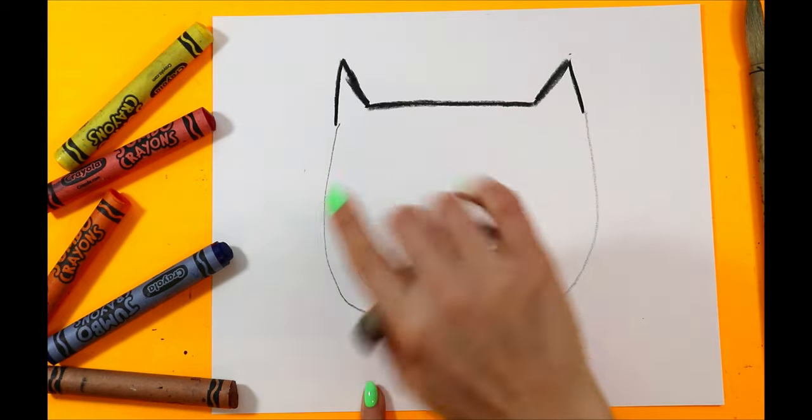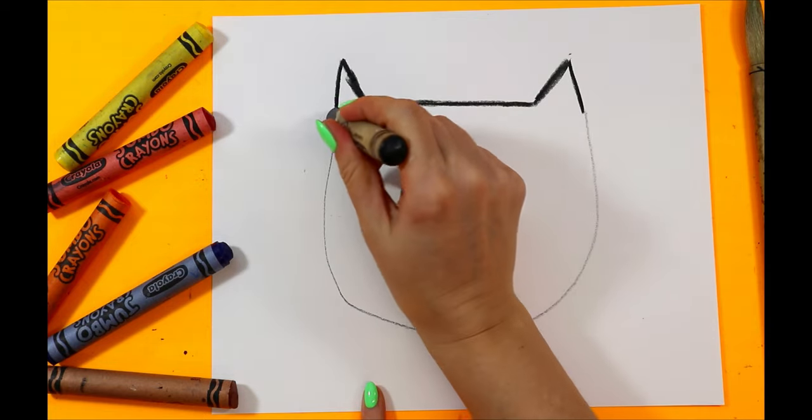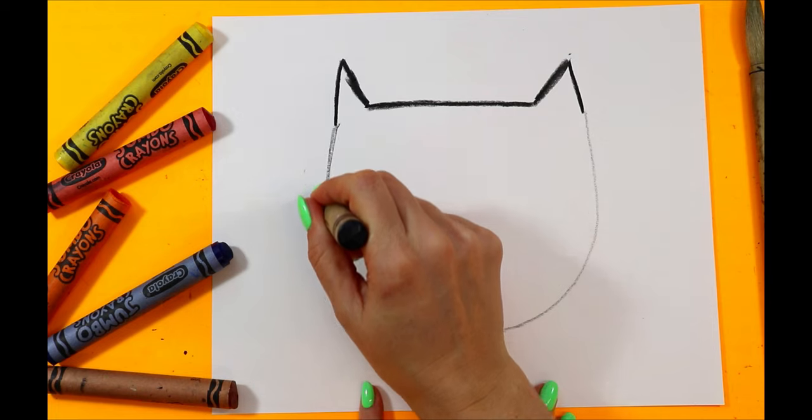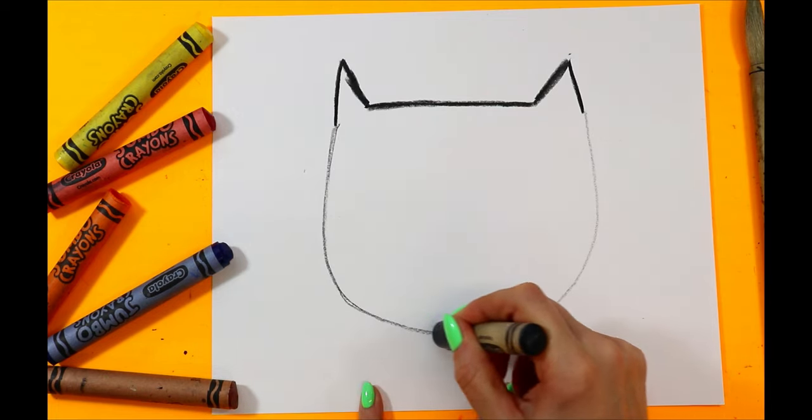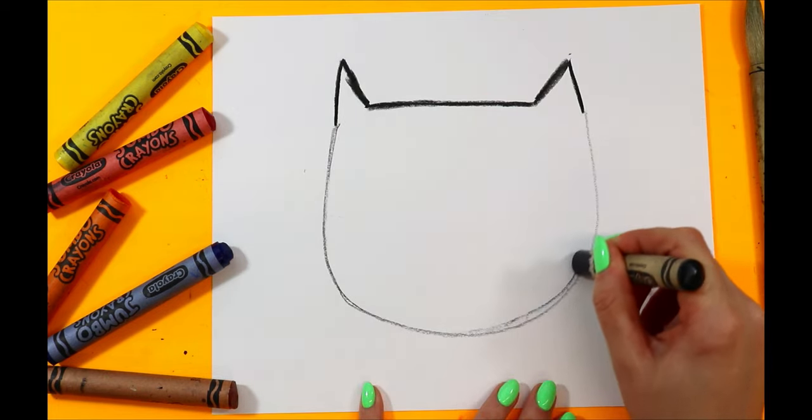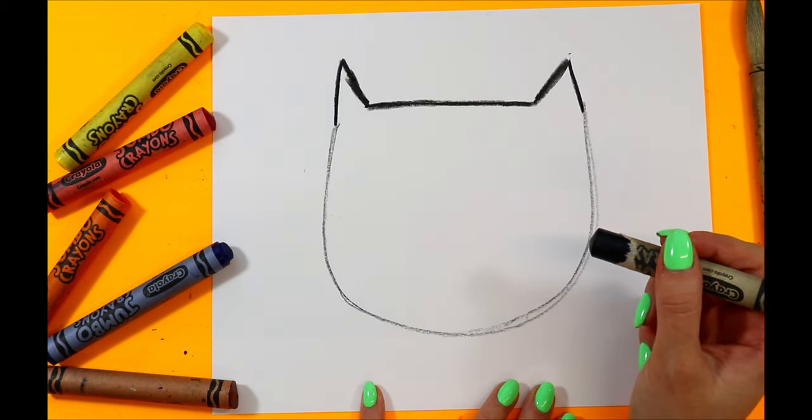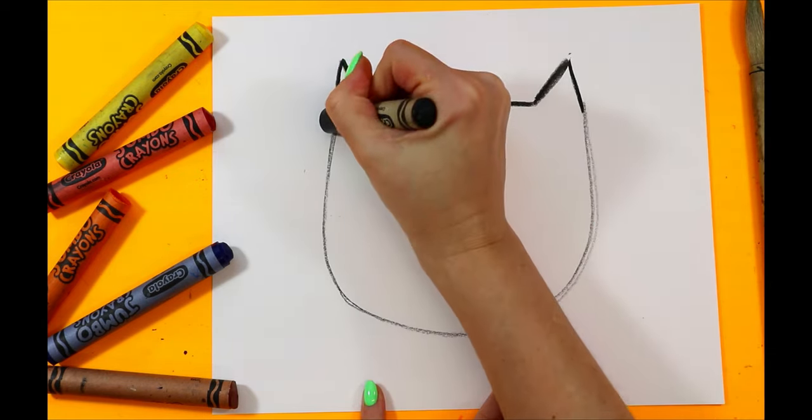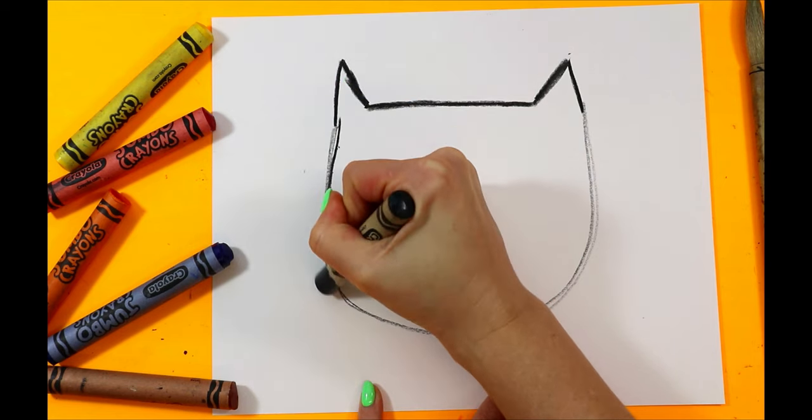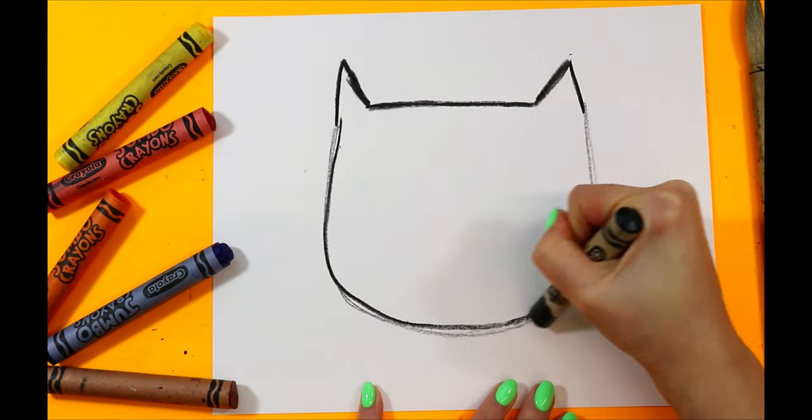We're going to draw a big sweeping U shape from one side down to the other. So we're going to do a practice line first. You can see my nice light line. Practice lines are nice and light, and then up. So then once you like that, we're going to go over it nice and dark.